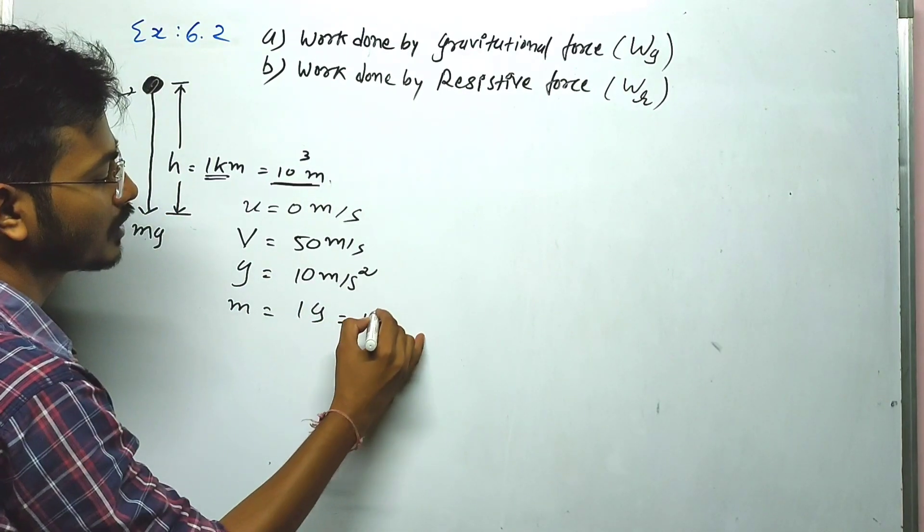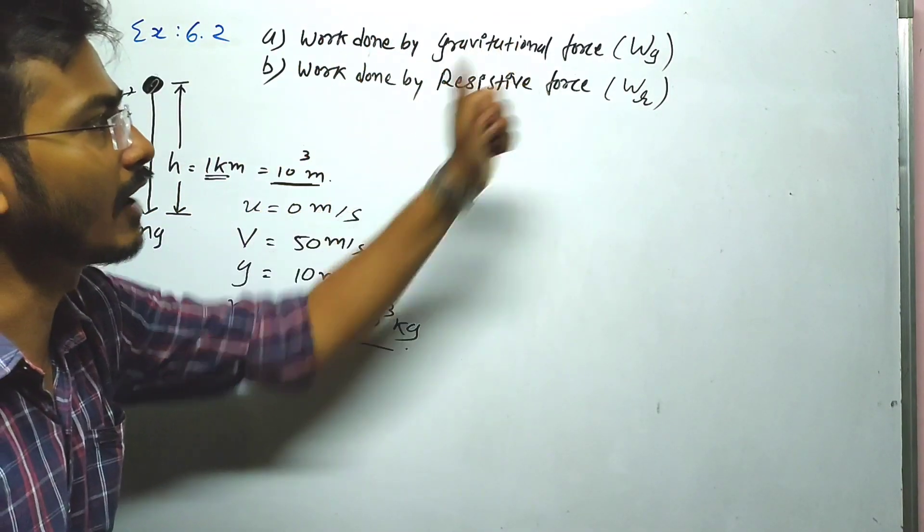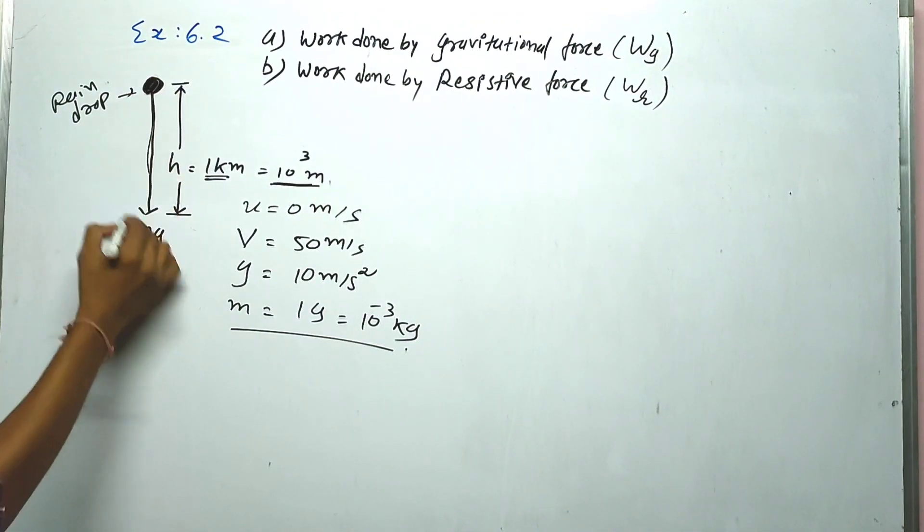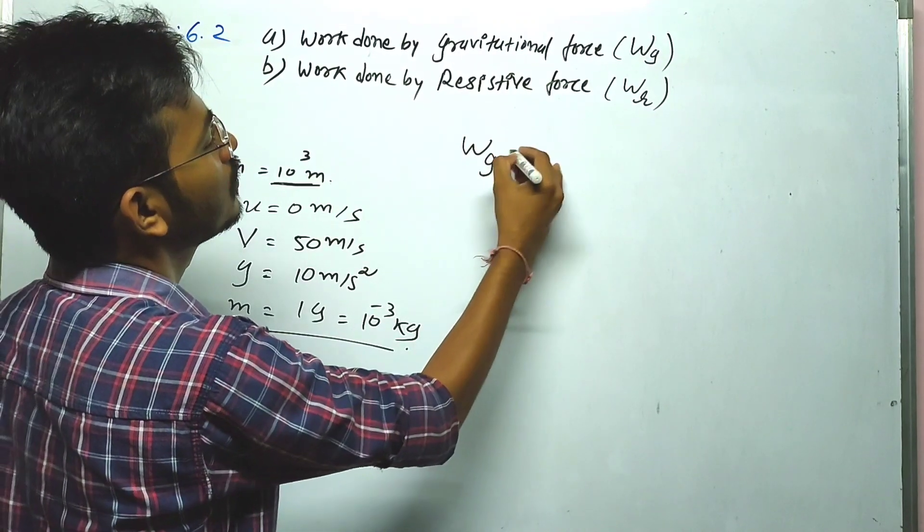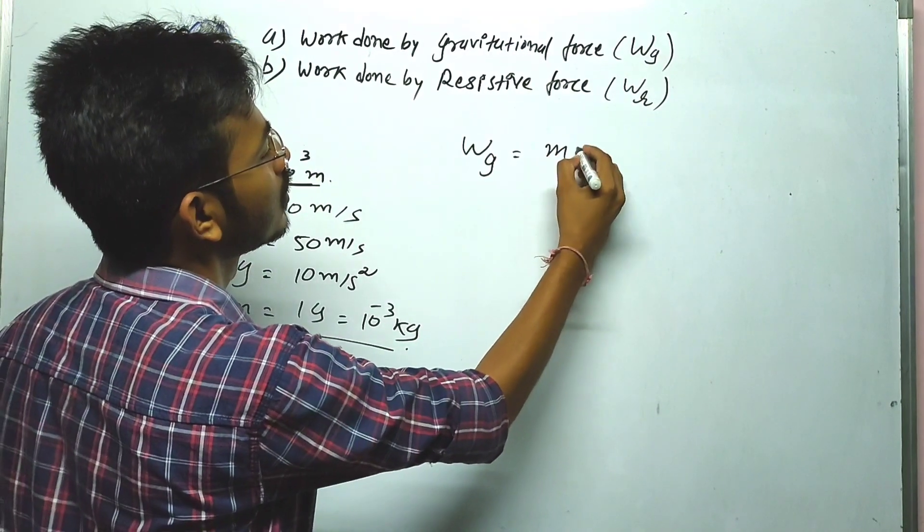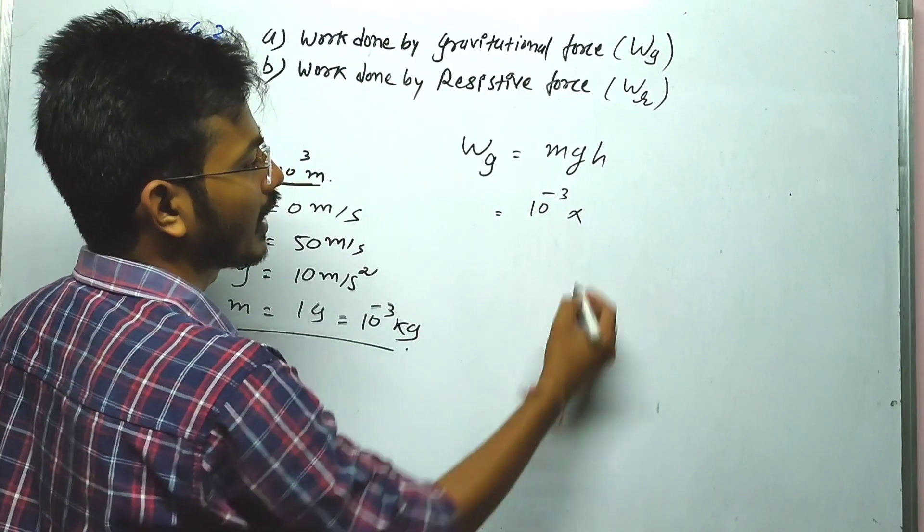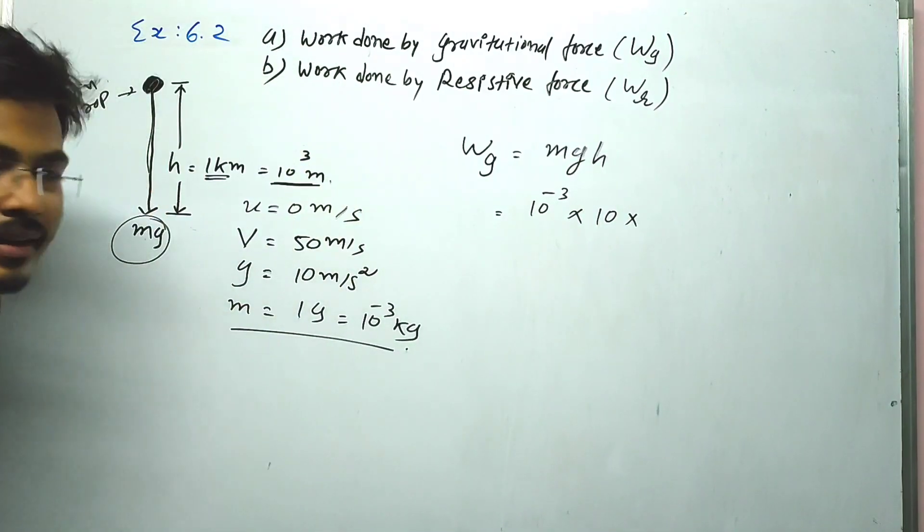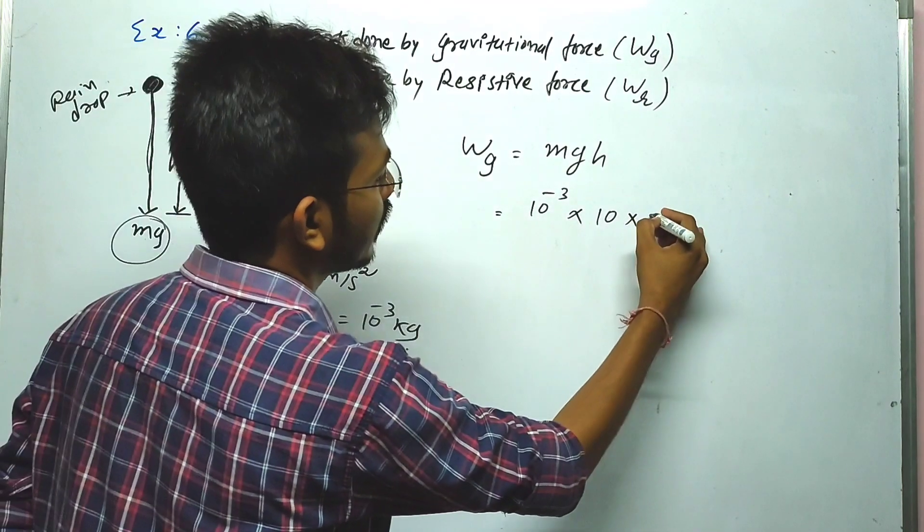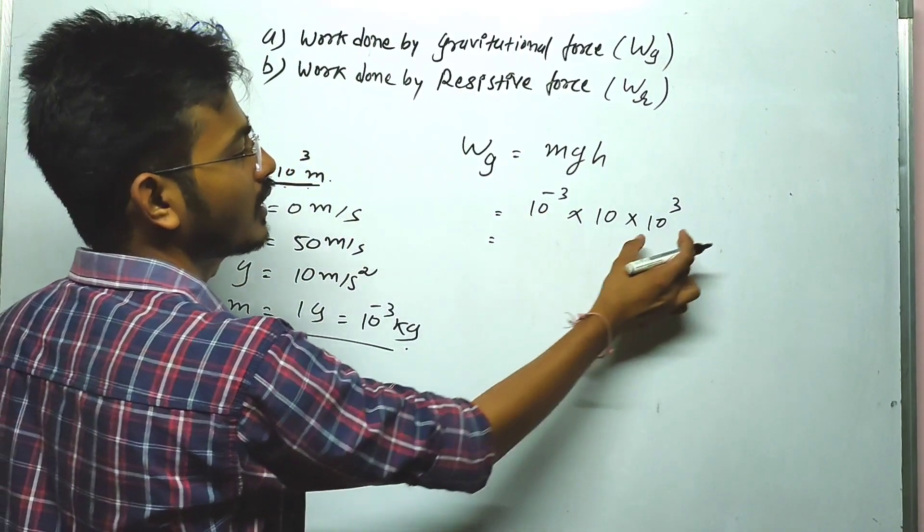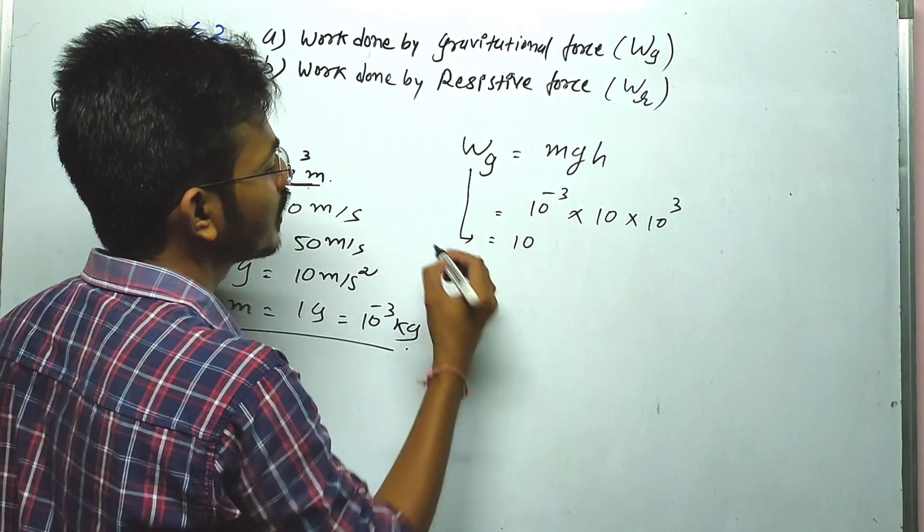Now we have to find work done by gravitational force in the downward direction. WG equals mgh. Mass value is 10 to minus 3, multiplication of g which is 10, and h is 10 raised to 3. So 10 raise to minus 3 and 10 raise to plus 3, the answer for WG is 10 joules.